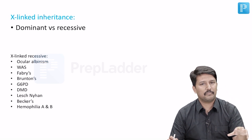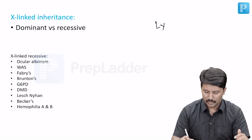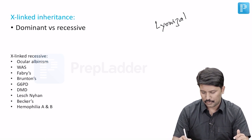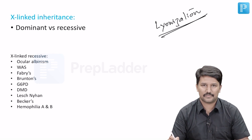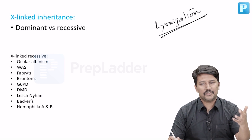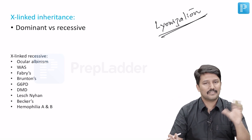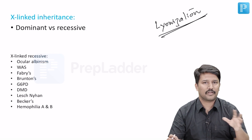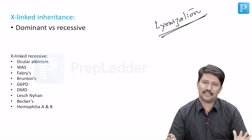This gets a little bit complicated because there is a concept known as lyonization. If you look at the karyotype of females, one X chromosome is active and the other X chromosome is completely silenced. So depending on which chromosome is silent and which gene was present on that, things get a little bit complicated when we talk about dominant and recessive inheritance in X-linked inheritance.